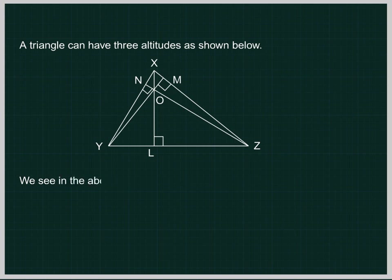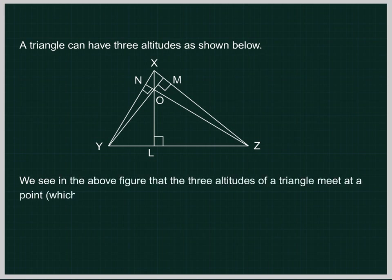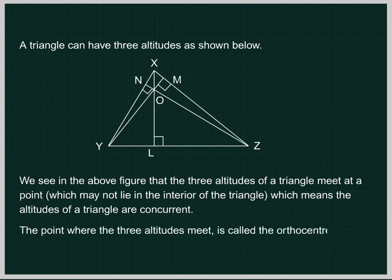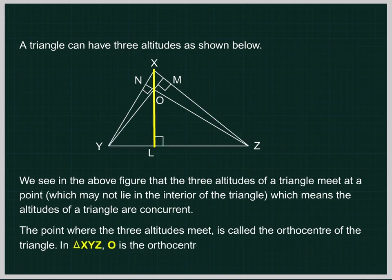The three altitudes of a triangle meet at a point, which may not lie in the interior of the triangle, which means the altitudes of a triangle are concurrent. The point where the three altitudes meet is called the orthocenter of the triangle. In triangle XYZ, O is the orthocenter of the triangle.